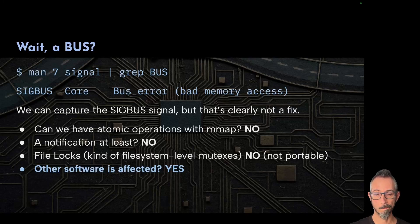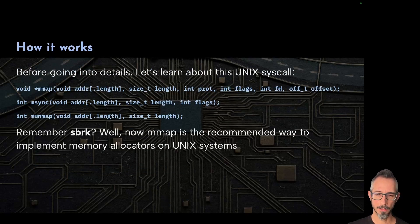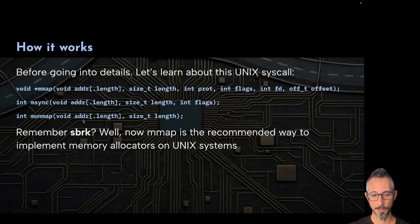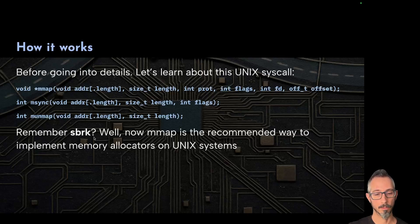Let's understand how mmap works. mmap takes an address, a length, the protection flags, some flags defining how to map, the file descriptor, and the offset from that file descriptor. We can use msync to synchronize contents from the file into the map, and munmap to deallocate the memory map. Remember SBRK? At the beginning of Unix it was used for implementing heap allocators; nowadays mmap is what you use. This means mmap has been really over-engineered to support many more use cases, and every operating system is growing in a different direction.